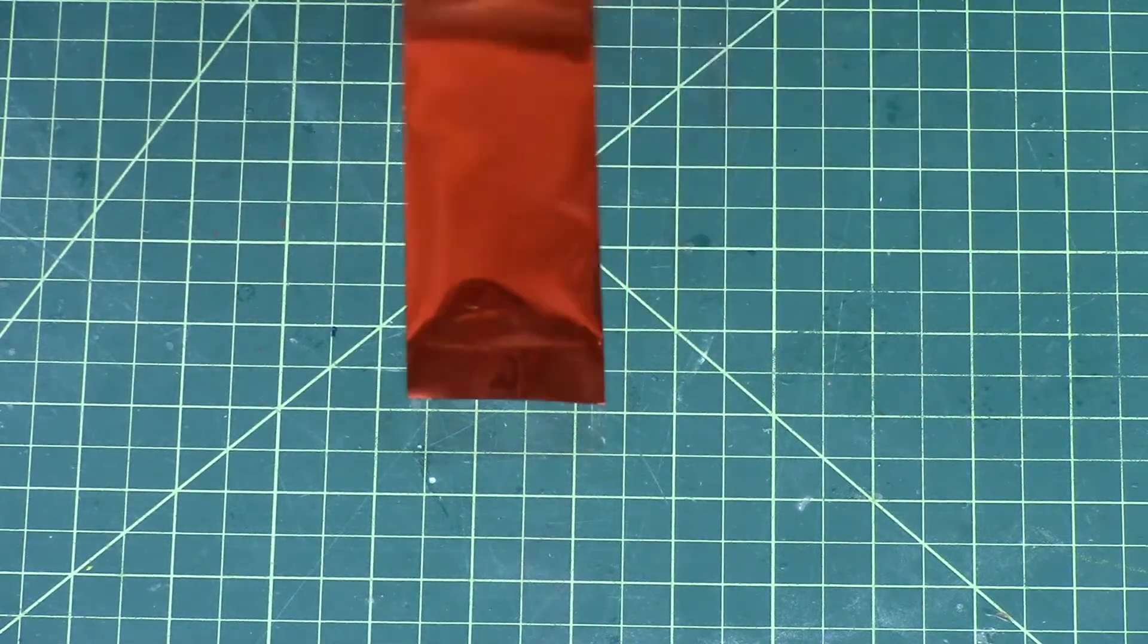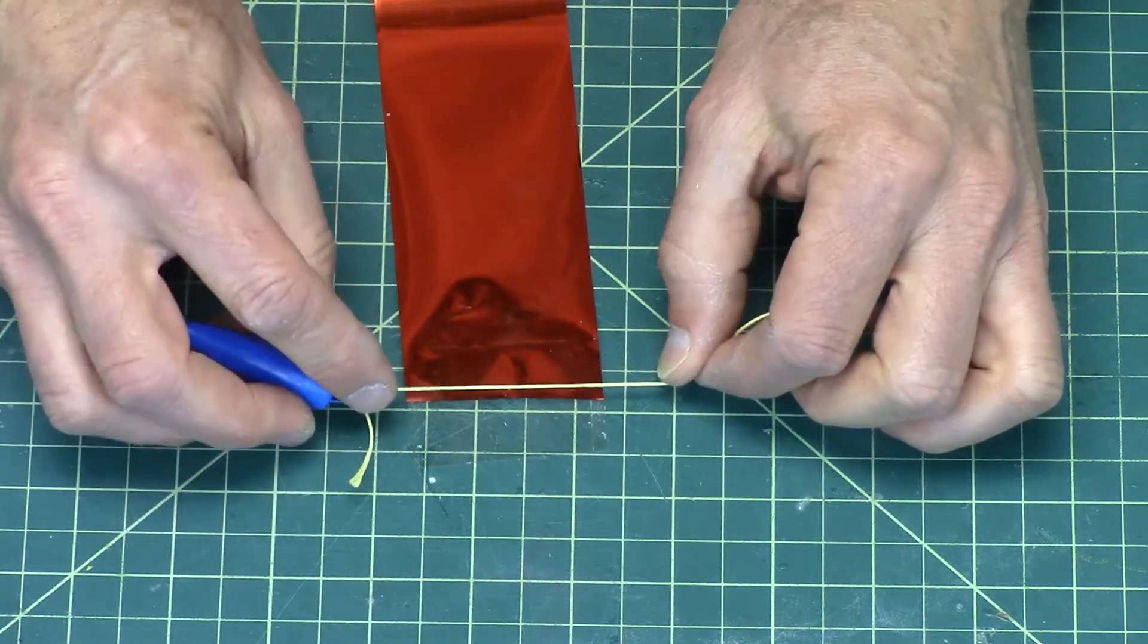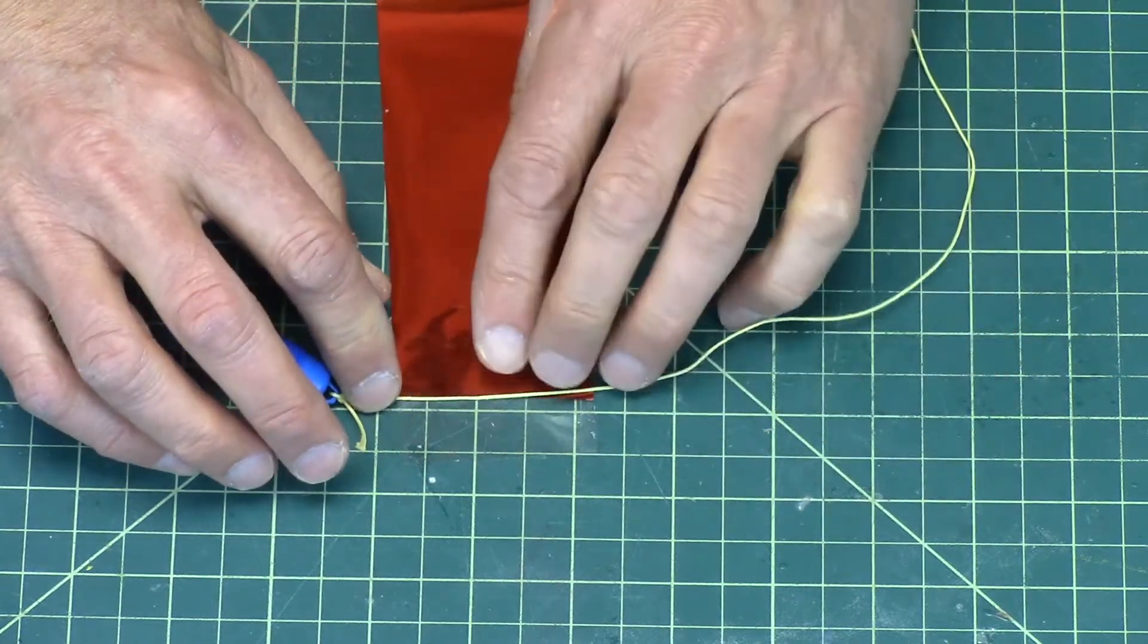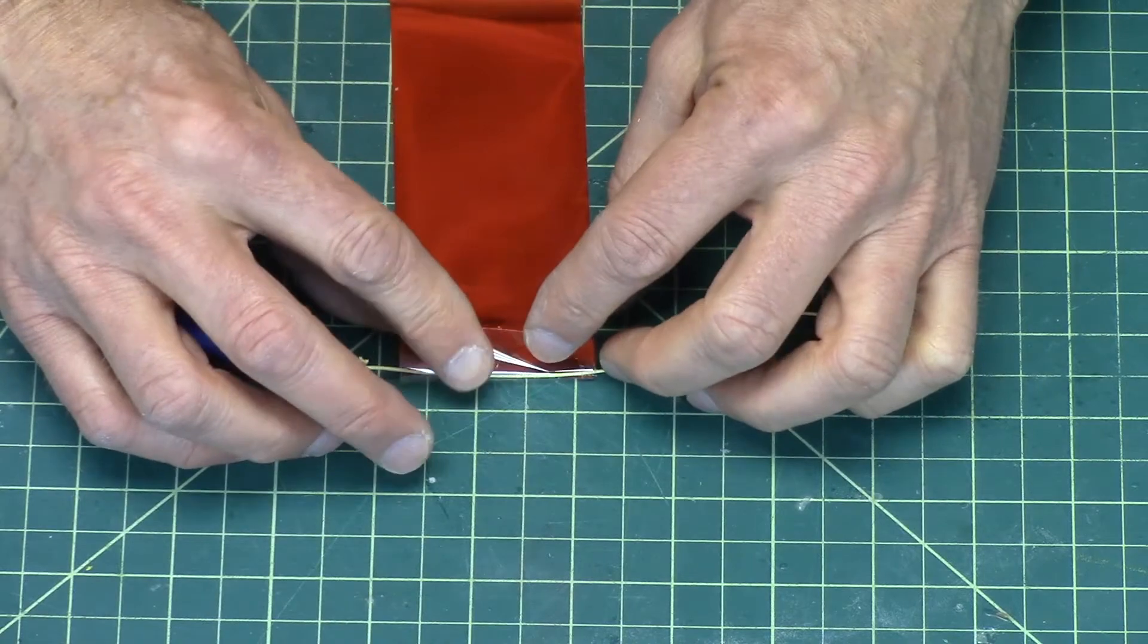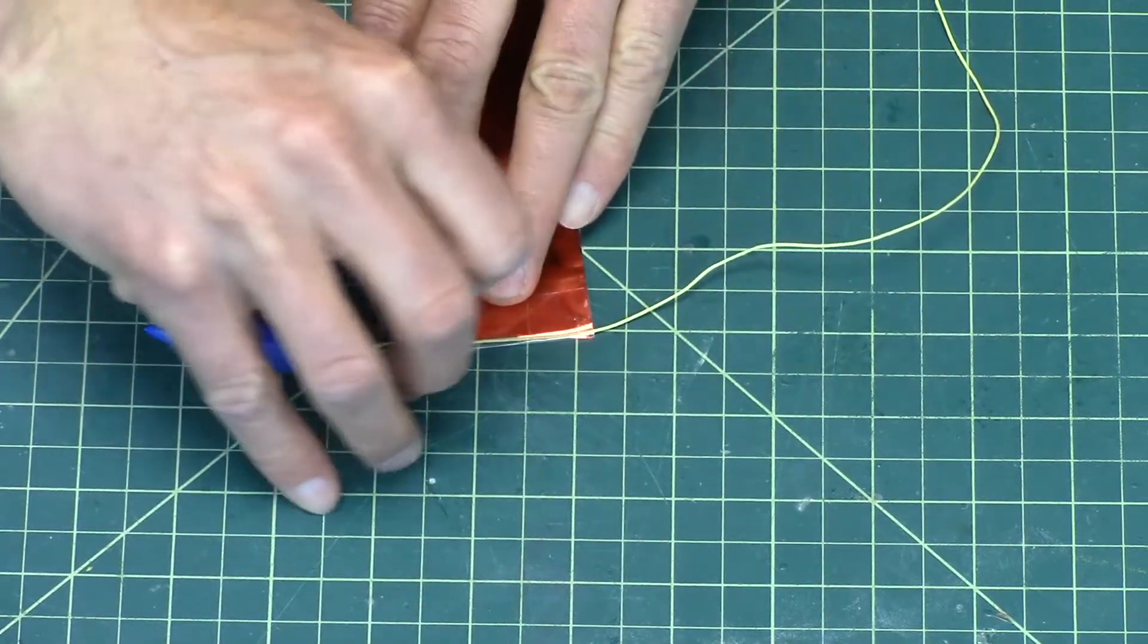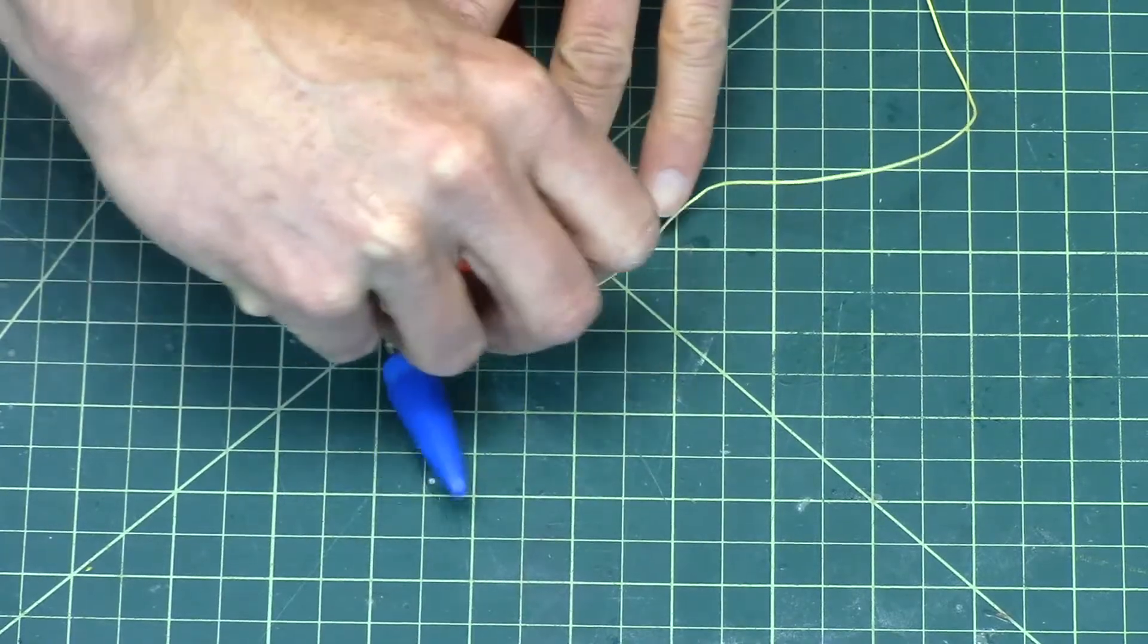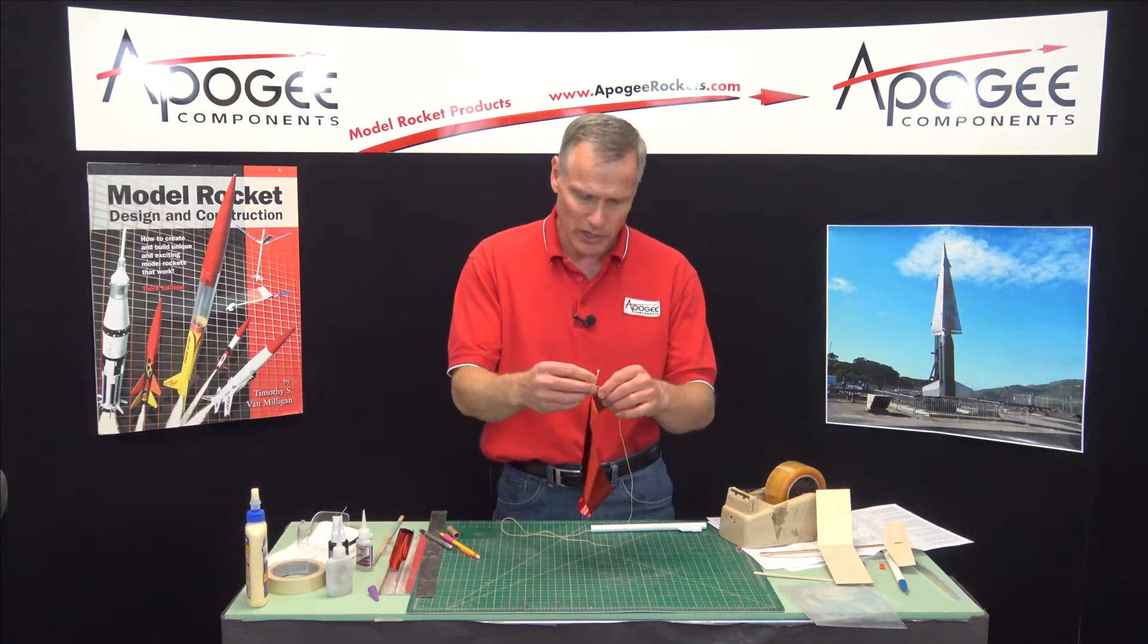Okay, and then take the shock cord close to the nose cone and just lay it right on the edge like that. Take the tape and then just fold it over the top. Press it down and then try to push the shock cord right there into the very corner edge, just like that. And then our shock cord is now attached.